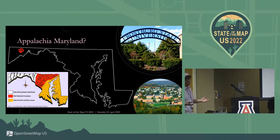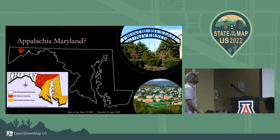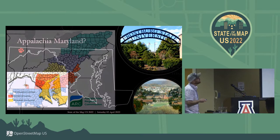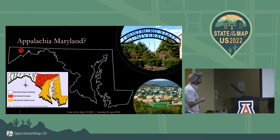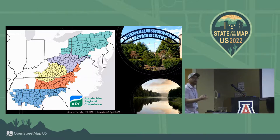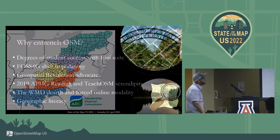Usually when people think Maryland, sort of conceptually, your place conception is either the Bay, the Wire, or the suburbs of D.C. But the three westernmost counties are actually considered Mountain Maryland — they are a portion of the Appalachian Regional Commission. Frostburg State is in Allegheny County, the middle one, right at the county line — the westernmost community in a nearly 50-mile-wide county. So we're smack dab in Appalachia.